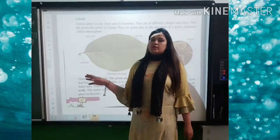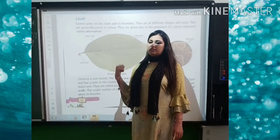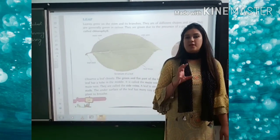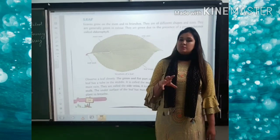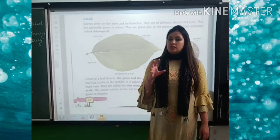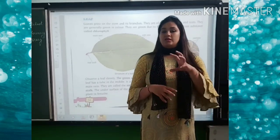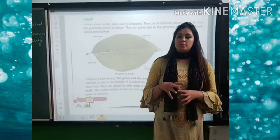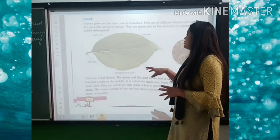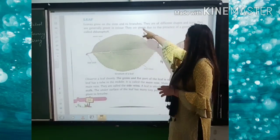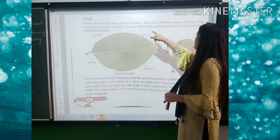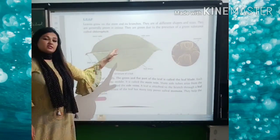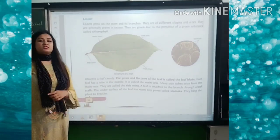This topic is about leaf. Let me tell you that leaf is the kitchen of the plant — food is made inside the leaf with the help of sunlight and chlorophyll, through the process of photosynthesis, and food is prepared in the form of glucose. Leaves grow on the stem and its branches. They are of different shapes and sizes, and they are generally green in colour due to the presence of a green substance called chlorophyll.